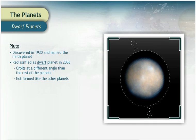There are two other dwarf planets that scientists have identified as well. The first is Ceres, which is the largest asteroid in the asteroid belt between Mars and Jupiter.